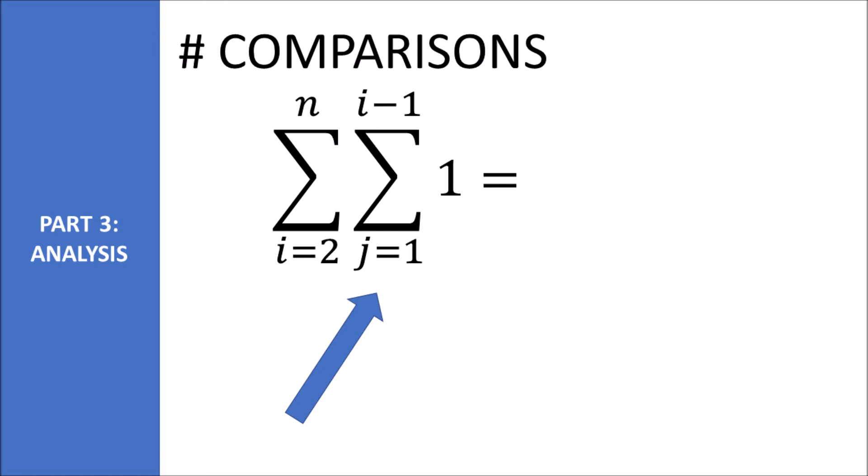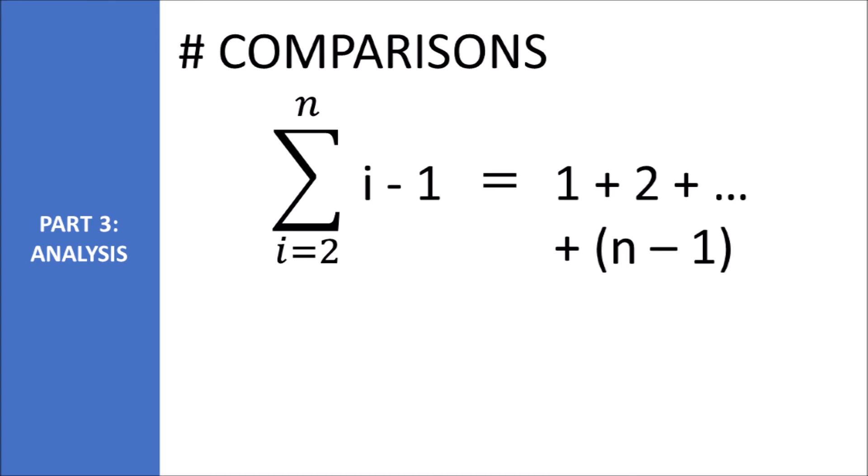If we plug in i, we see it results in 2 minus 1, iterated up by 1 all the way up to n minus 1.